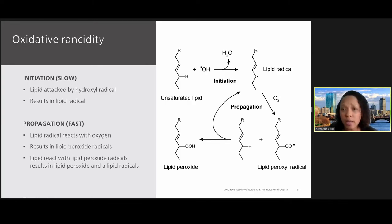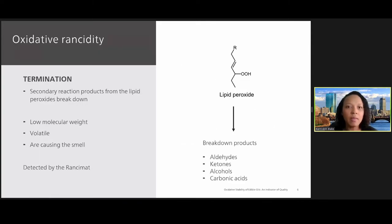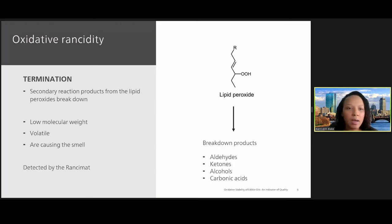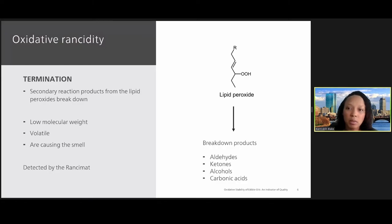This begins what is called a continuing free radical peroxidation chain reaction, or auto-oxidation, that repeats over and over again — a cyclical mechanism that results in oxidative degradation of the lipid. The propagation stage is considerably faster than the initiation stage. The final stage is termination, involving the slowing or stopping of reactions. Secondary reaction products from the lipid peroxide start to break down into aldehydes, ketones, alcohols, and carbonic acids. These are very volatile species that cause the rancid odor we sometimes smell, and they are what we detect when we use the Ransomat method.